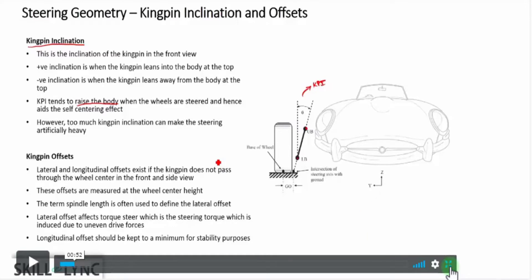Now what's the sign convention here? Well in this particular case, angles measured in clockwise is going to result in a positive KPI and if there is a negative KPI, then basically the kingpin axis is going to be the other way.